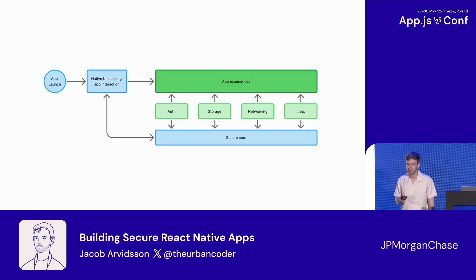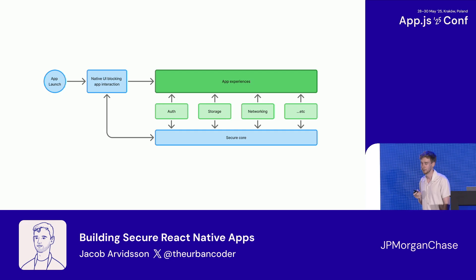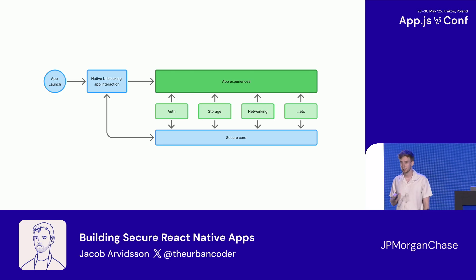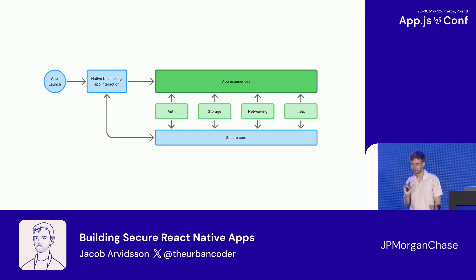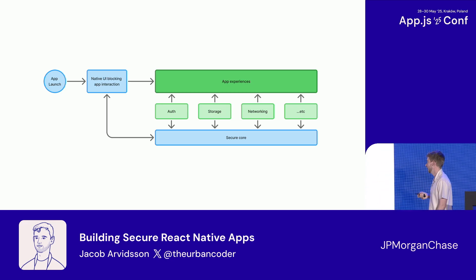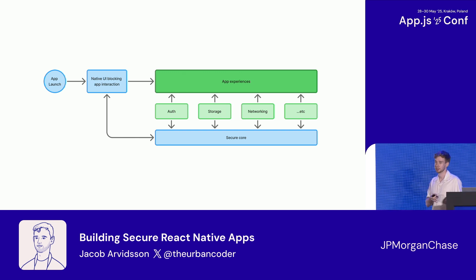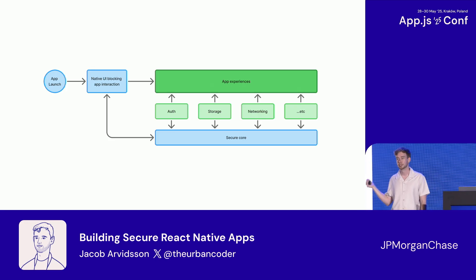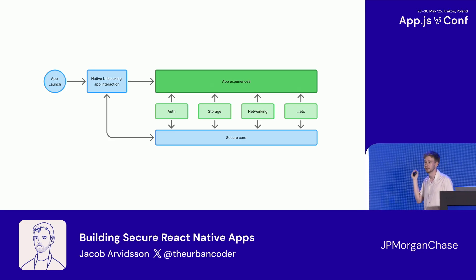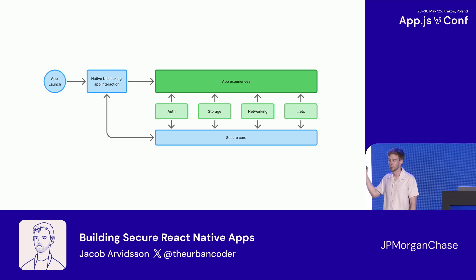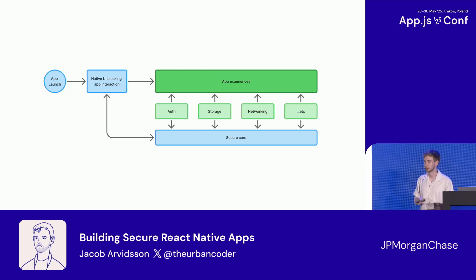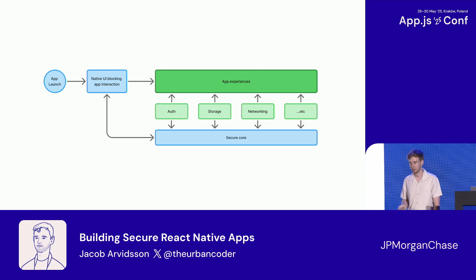If you draw this app as a diagram: the app launches, there's a native screen that blocks the app from loading, and once that's done we have our app experience using security features through native modules. You can already see it starts looking like a brownfield app. The native modules also need to be aware of each other — storage needs to know if the user is authenticated, and networking needs to get the token from secure storage. We can't pass this back and forth to the JavaScript side because that opens us to reverse engineering, so we need something like a secure core.